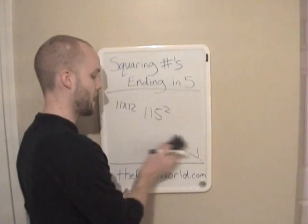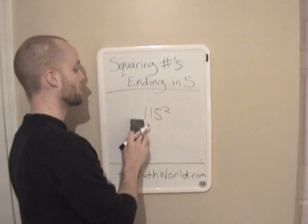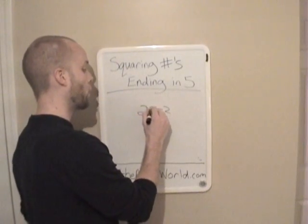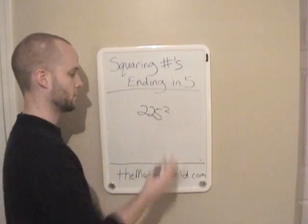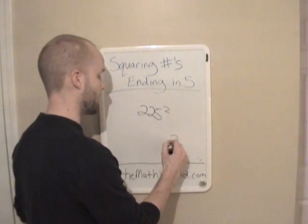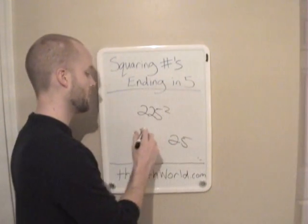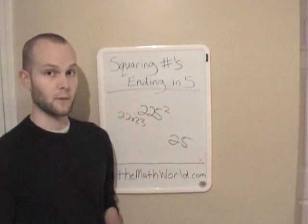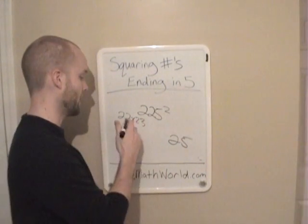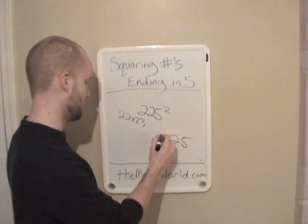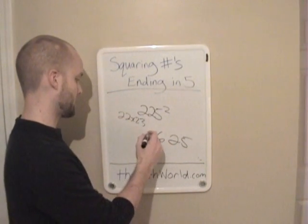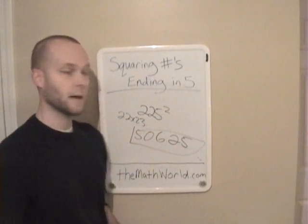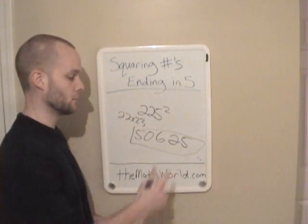And this is going to work even if you have a much larger number. So if we have 225 squared, you can just write down 25, and you can just do 22 times 23. 22 times 23 is 506, so 50,625. It's going to work with anything you do.